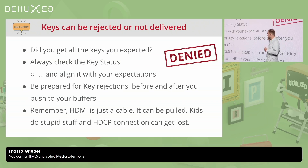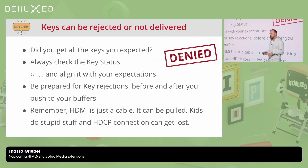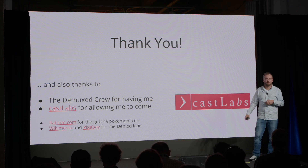Last but not least, key status updates are crucial. Keys can be rejected by the DRM server, or you can have dynamic environments — my pet peeve is HDCP over HDMI. You have an HDMI cable creating an encrypted channel between your display and client, and if someone trips over the cable and it unplugs, you lose your HDCP connection and the key is no longer usable. Your player needs to handle this: wait, switch down to a rendition that's playable, pause, and wait until the cable is plugged back in. With that, thank you for listening. Thanks to the DMUX crew, Phil and Matt, and everyone involved, and to my employer Cast Labs for allowing me to be here.